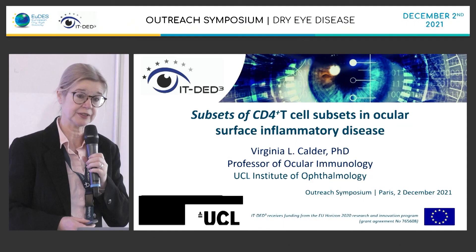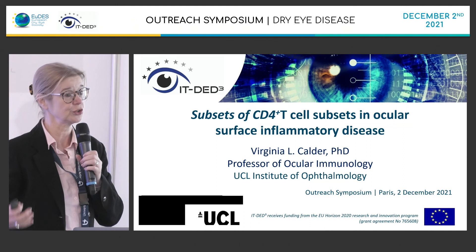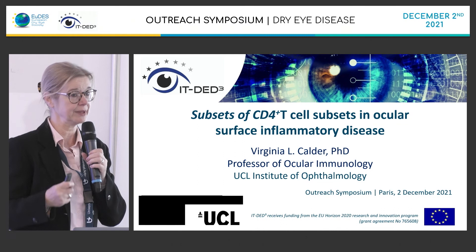In the program it said T cell subsets in ocular surface inflammatory disease, but to be more specific and to make you a little bit more nervous, I will be talking about subsets of T cell subsets. Just when you thought life was getting very easy — now we have a few more, and it's very relevant to the ocular surface. When thinking about future drugs and targeting, we need to always be aware of what's happening at the basic science level.